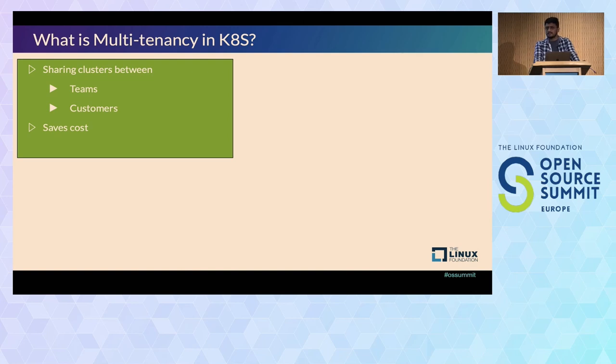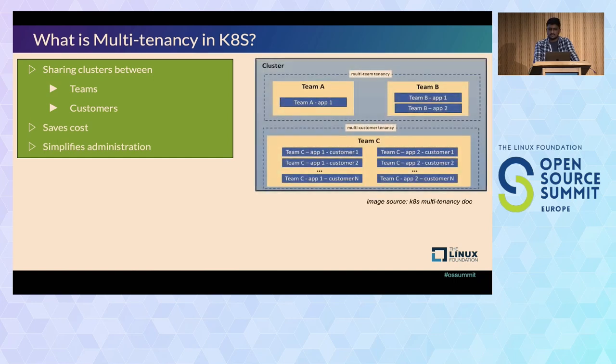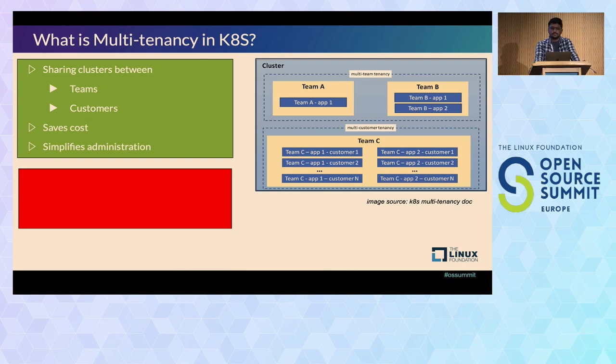Creating a single tenant cluster is quite expensive. So when you use a multiple tenant cluster it saves a cost, it also simplifies administration. Just imagine if someone is creating thousand single tenant clusters and now the overhead to manage this thousand cluster is very high. And if you also got to manage maintain the ingress controller, then cert manager, Prometheus and other metrics controller in all of these clusters, then it's a lot of work to manage everything. This is the diagram from the Kubernetes talk showing how the multi-team tenancy and multi-customer architecture is.